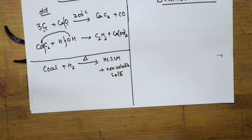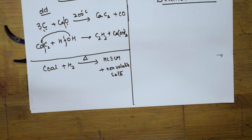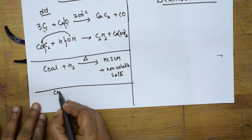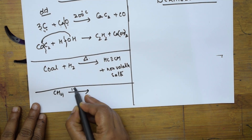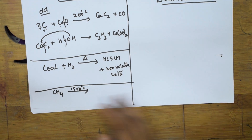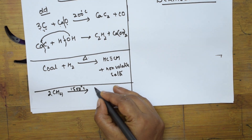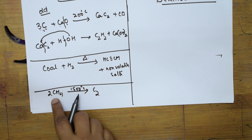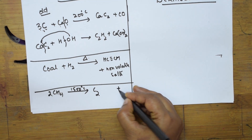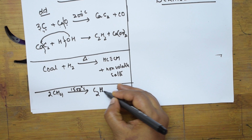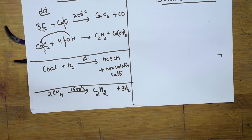There is also a method of preparation of acetylene from methane. You can use this process for conversion of alkanes to alkynes. When methane, formula CH4, is heated at 1500 degrees centigrade, taking two moles of methane — with two carbons and eight hydrogens — six hydrogens come out as hydrogen gas H2, leaving C2H2. So this is the preparation of acetylene.